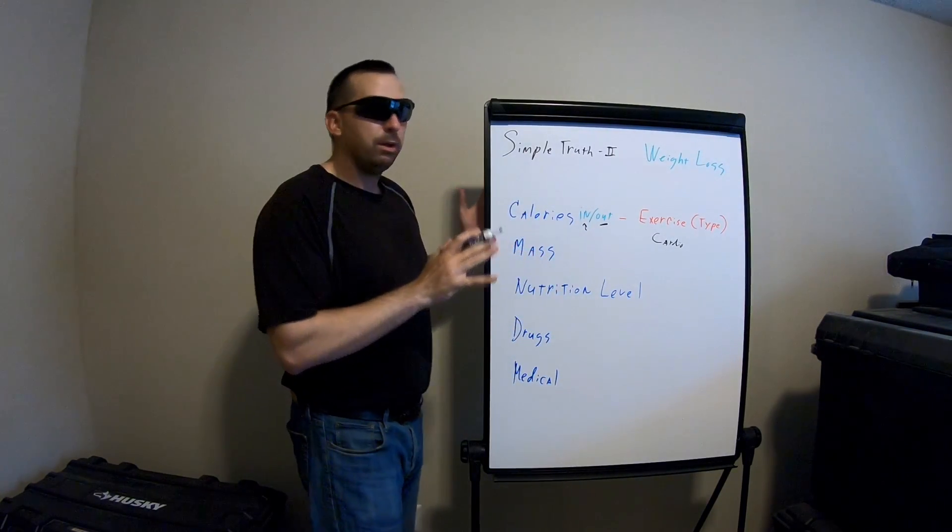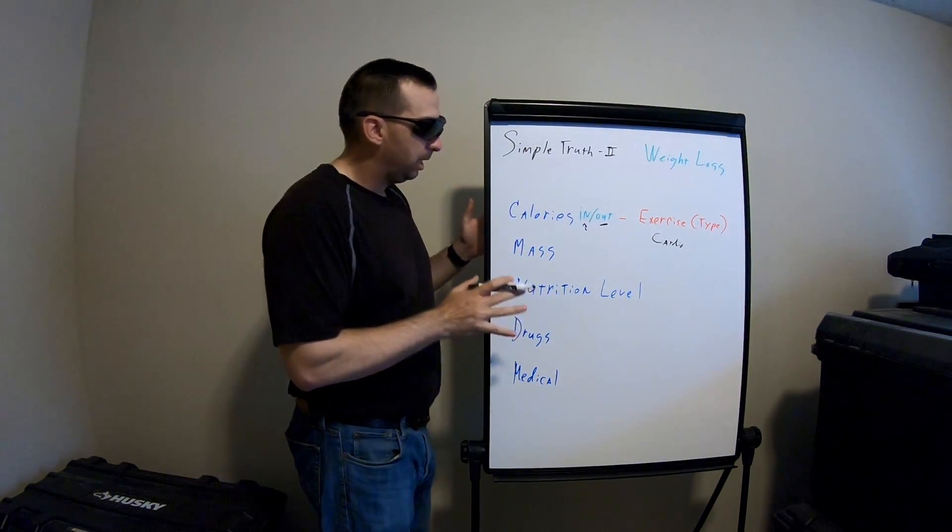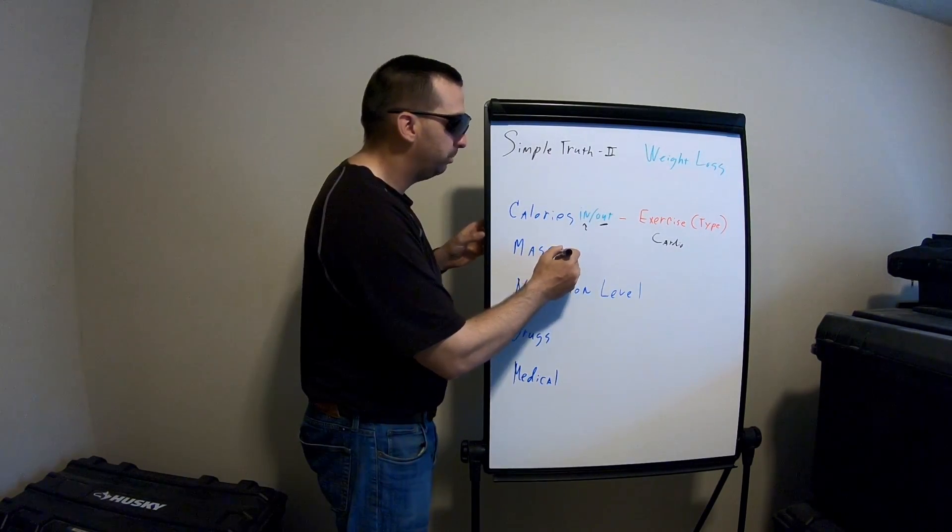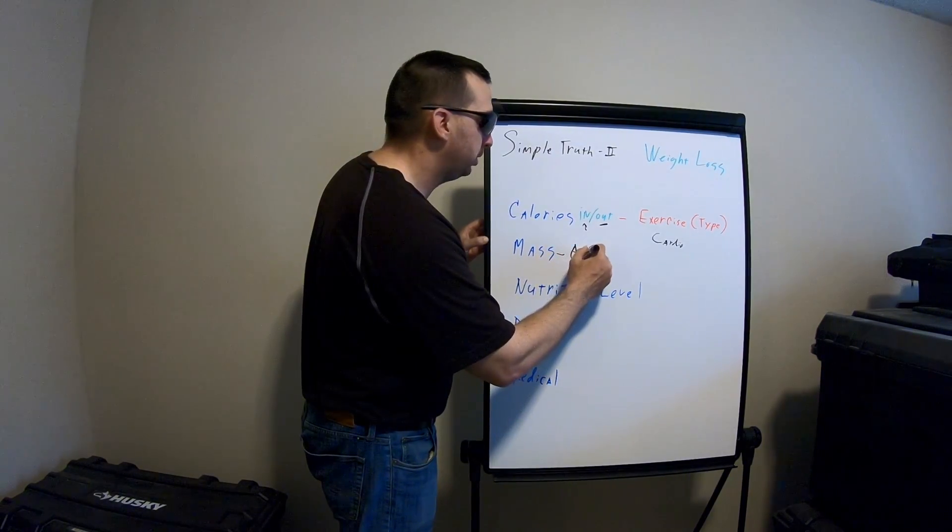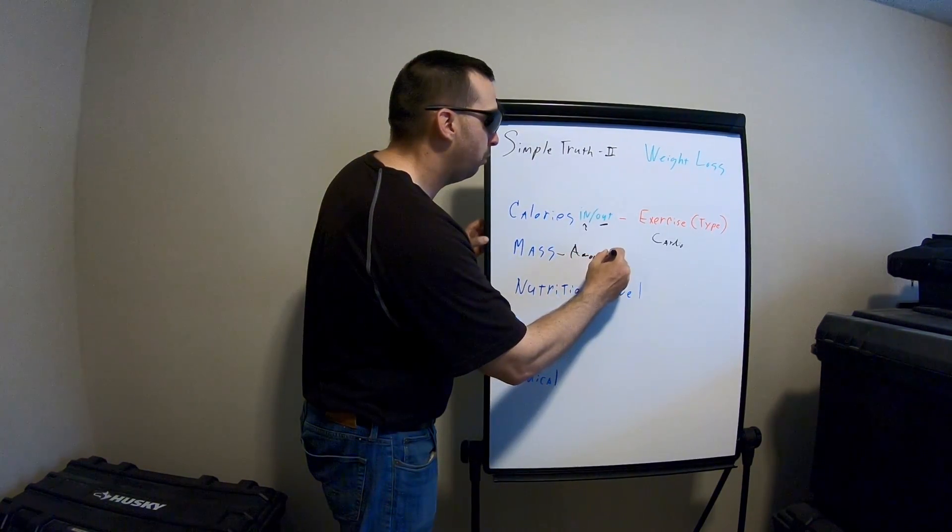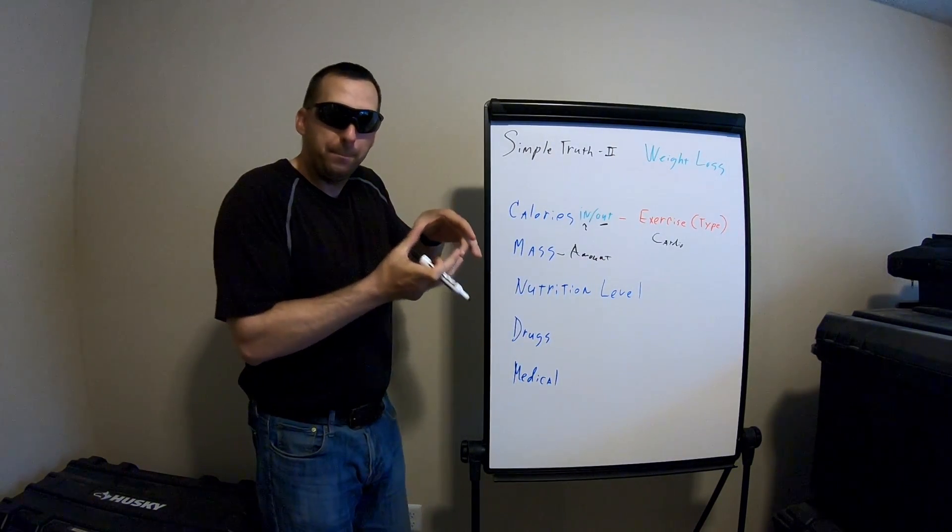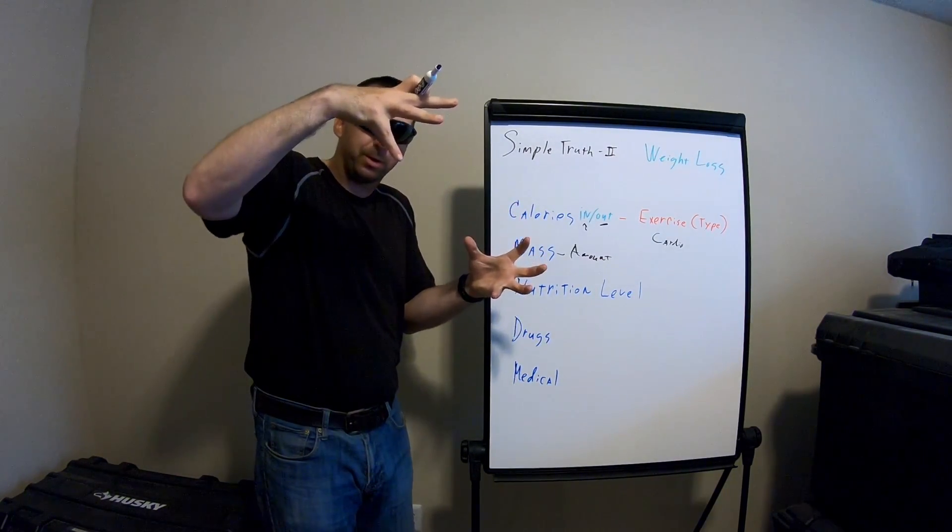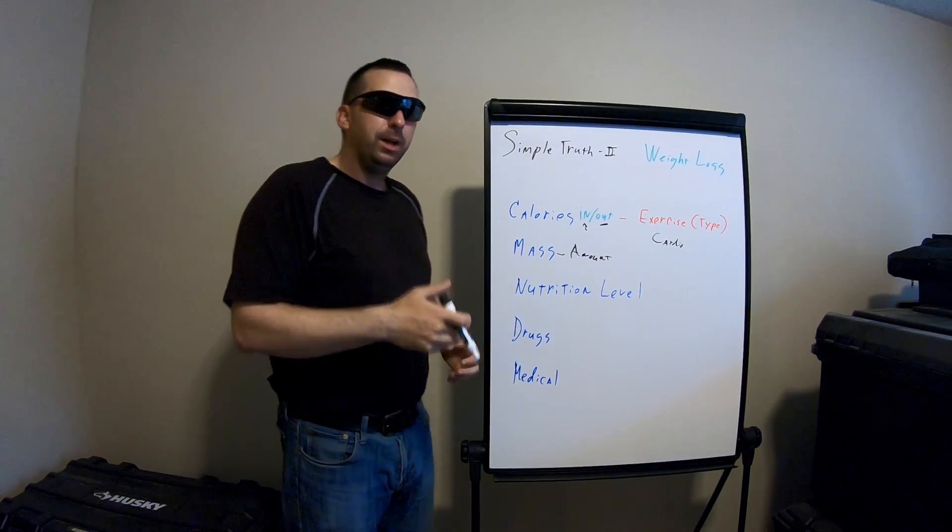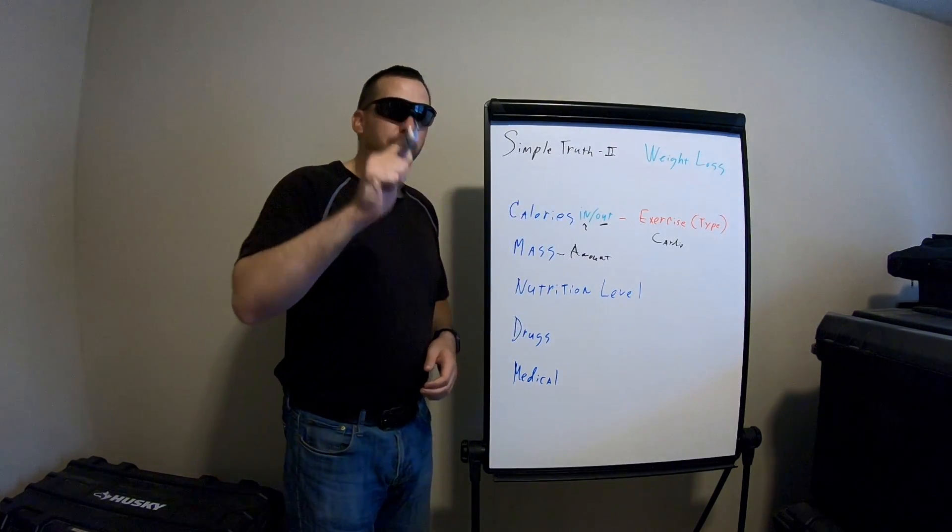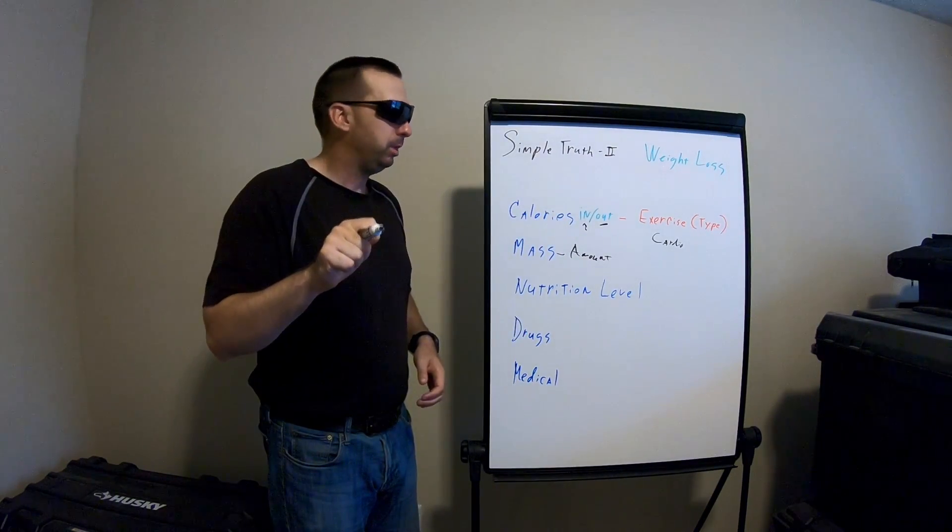Now, when you're calculating calorie intake, you have to go into a couple of simple factors. One, the mass, which means the amount, how much of what you're putting in. Now, if you like a burger, get a burger, not a fricking huge burger. And boom, you've just cut down your intake. Again, you're deciding how many calories go in you.